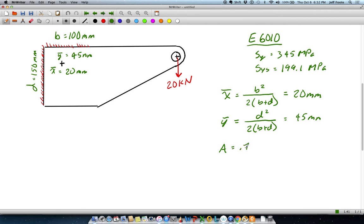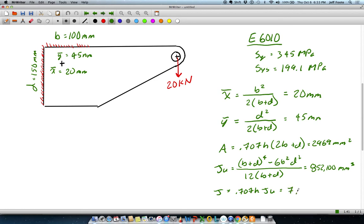Cross-sectional area here is given as 0.707 times H times 2B plus D. That comes out to be 2969 millimeters squared. JU is given as (B plus D) to the fourth minus 6B squared D squared divided by 12 times (B plus D). That gives 852,100 millimeters cubed, and then J is going to be 0.707 times H times JU, and that comes out to be 7.229e6 millimeters to the fourth.